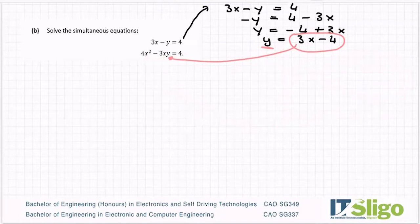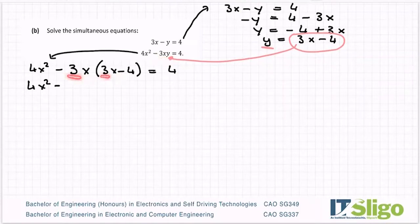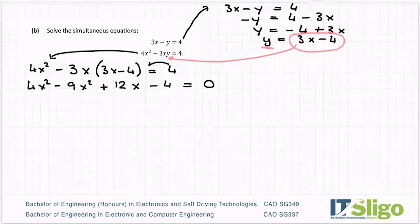So what do I get when I do that? Well, I end up getting 4x squared minus 3x. Instead of y, I'm putting in 3x minus 4, and that's equal to 4. So 4x squared minus, right, so I need to multiply these together. So 3x by 3x, but 3 by 3 is 9, x by x, x squared. Let's go again. Minus by minus is a plus. 3 by 4 is 12x.